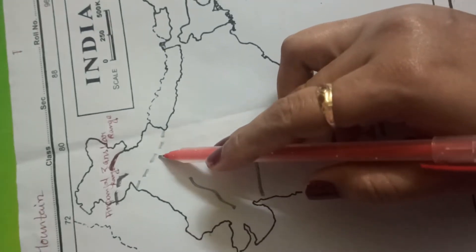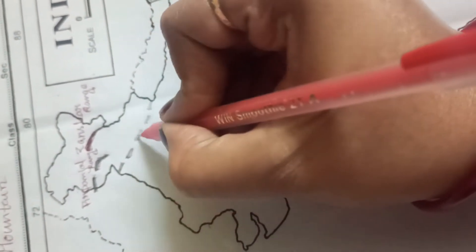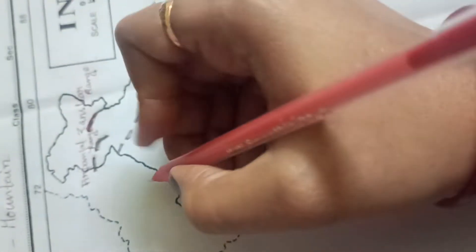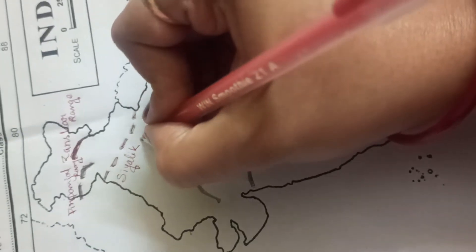And this one, this one you can see here. This range is known as Sivalik mountain range.